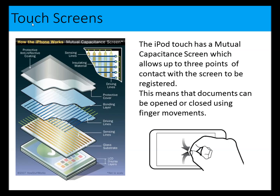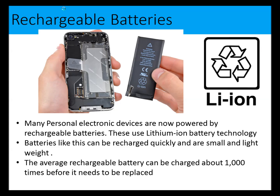Touchscreens use what is called mutual capacitance technology. The latest ones have three points of contact, which means documents can be opened and closed using finger movements. Many personal electronic devices are powered by rechargeable lithium-ion batteries. These can be recharged quickly and are small and lightweight. The average rechargeable battery can be recharged about a thousand times before needing replacement, and capacity and recharge cycles are improving all the time.